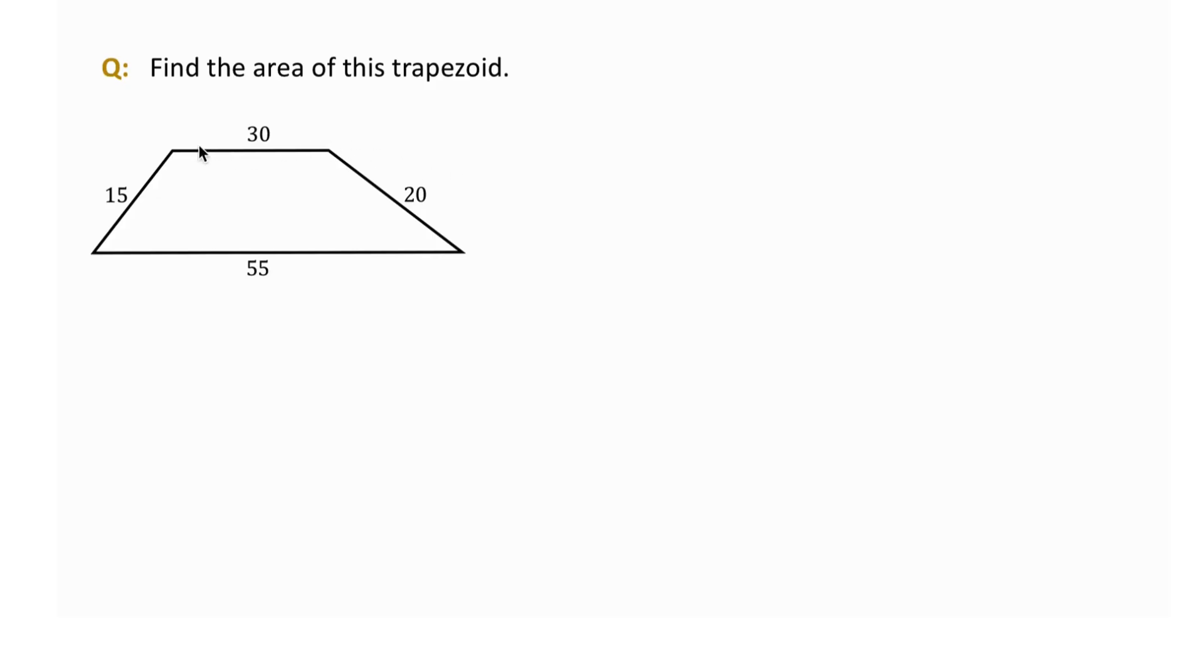The top base is 30 units, the bottom base is 55, and the slanted sides are 15 and 20. We are going to find the area, but since only the side lengths are given, we need to create the height ourselves. That's the key to unlocking the area.